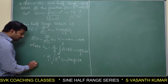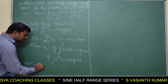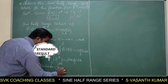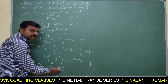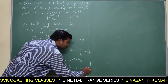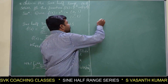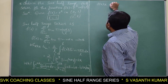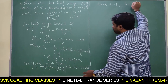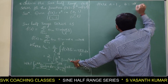We use the standard formula: ∫e^(ax)·sin(bx) dx = e^(ax)/(a²+b²) · (a·sin(bx) − b·cos(bx)). Comparing with our integral, a = 1 (since we have e^x = e^(1·x)) and b = nπ (since we have sin(nπx)).